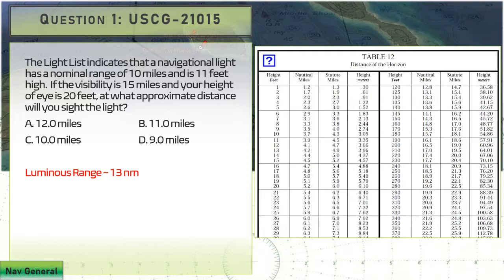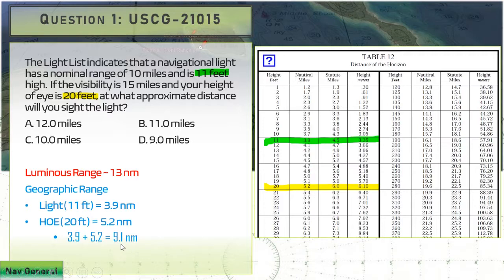Step two, we're going to figure out our geographic range. That's the other process where we take into account the height of the light and the height of the observer. We're going to use table 12, that's the way I prefer to do it. Our light is 11 feet high. We highlight 11, that's 3.9. Our height of eye is 20 feet. We find 20 feet, 3.9 and 5.2, we're going to add those together and get 9.1.